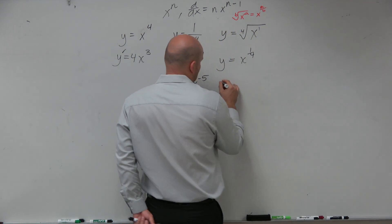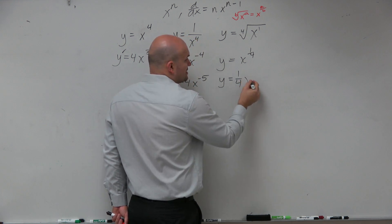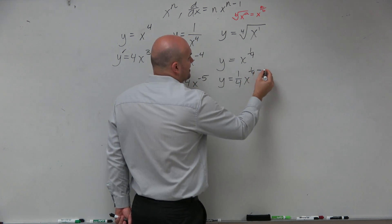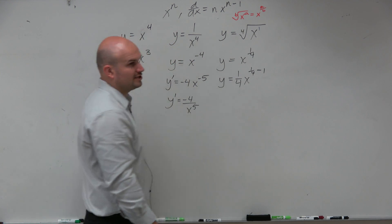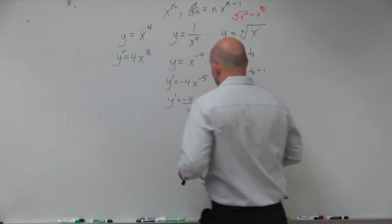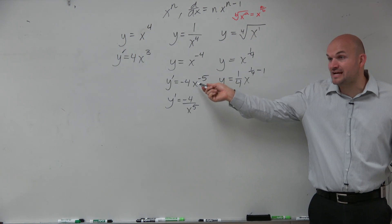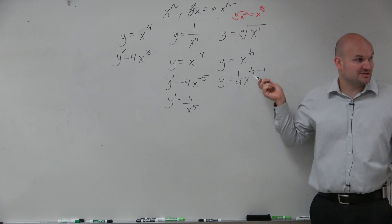Now, we're going to do the same thing. y equals 1 fourth times x to the 1 fourth minus 1. I'm going to show it like that just because I know fractions sometimes gets us a little confused. But you guys would agree with my math. I'm doing the same thing, right? It doesn't matter if it's negative numbers or fractions.